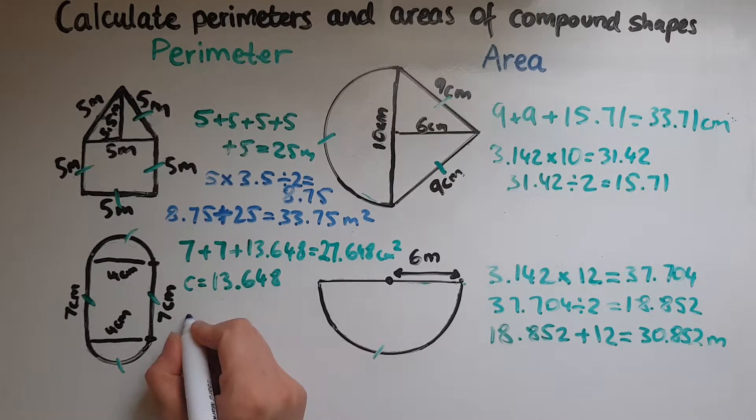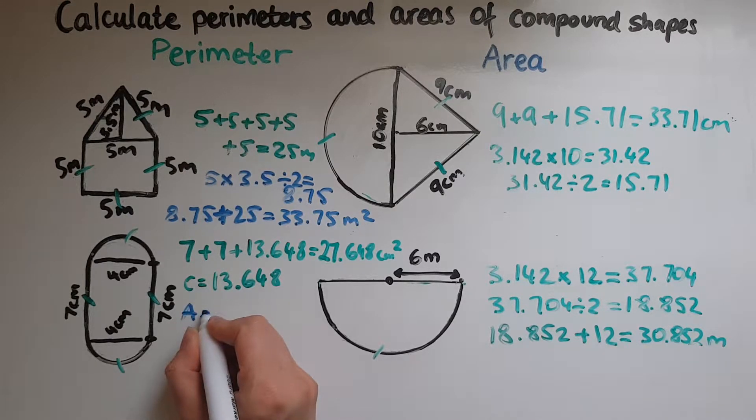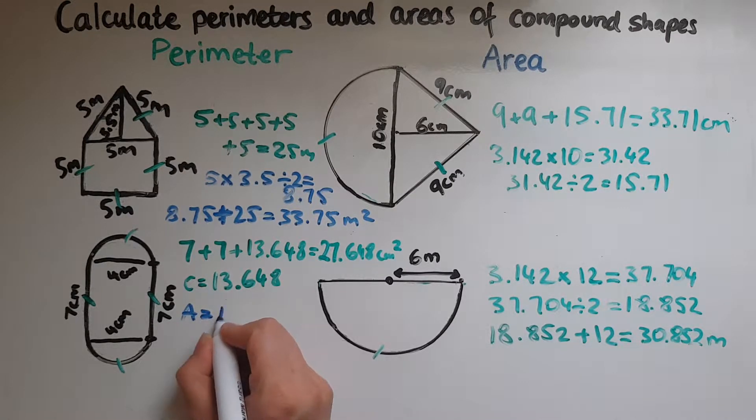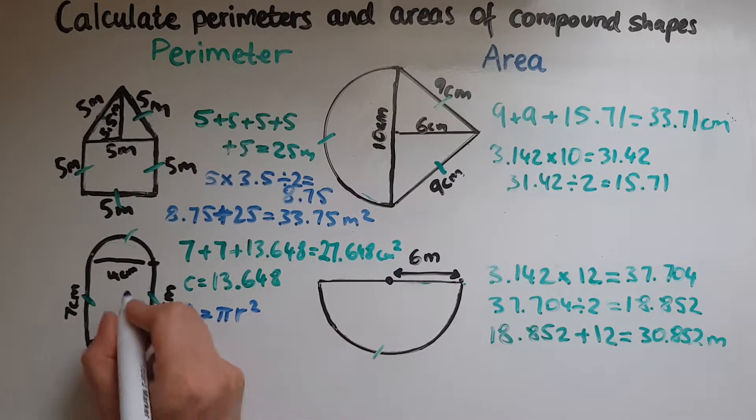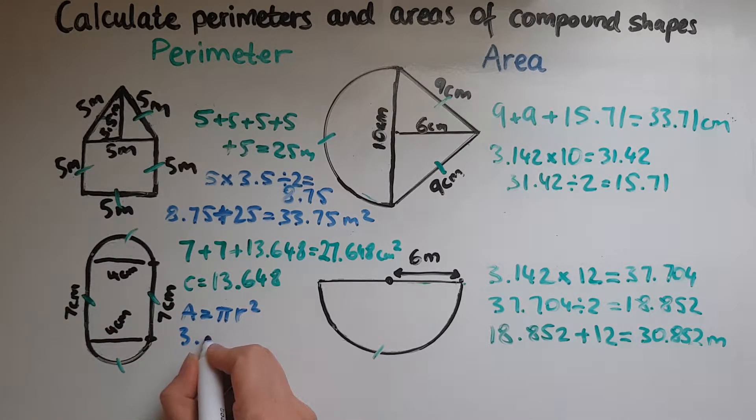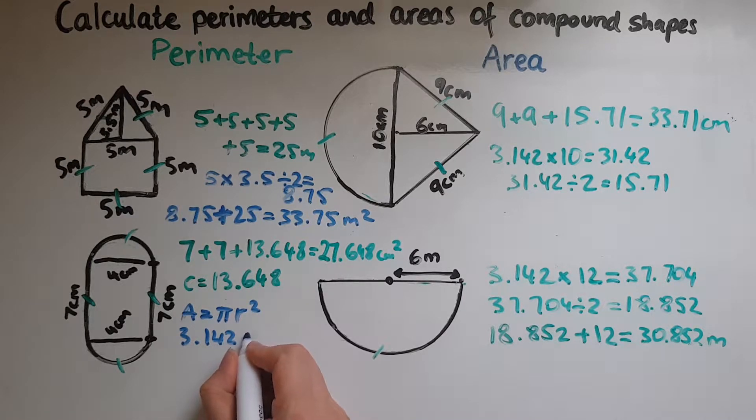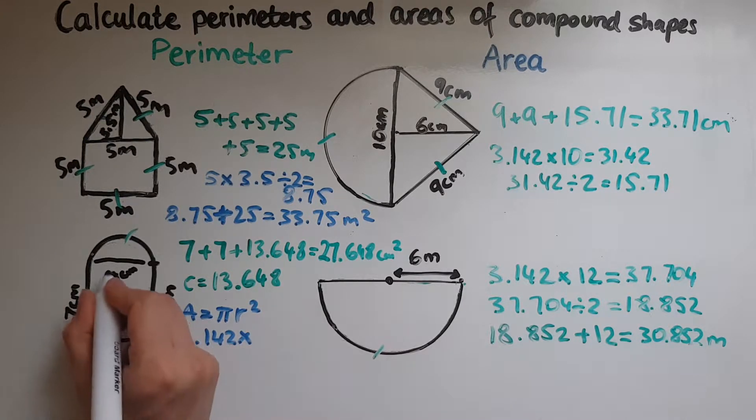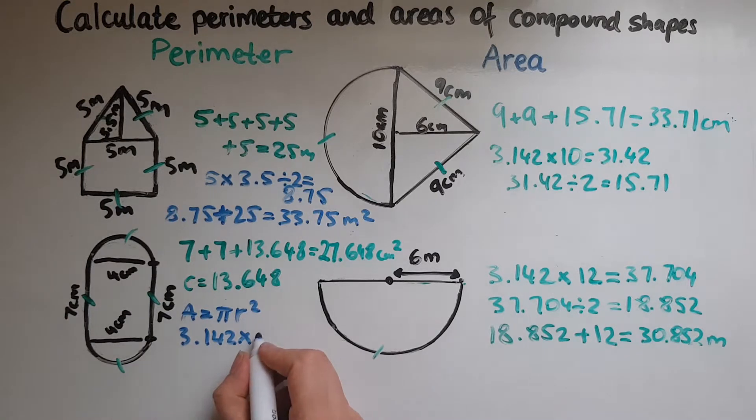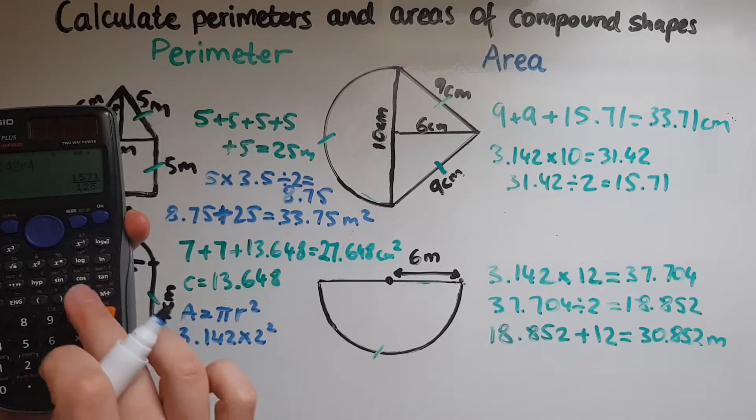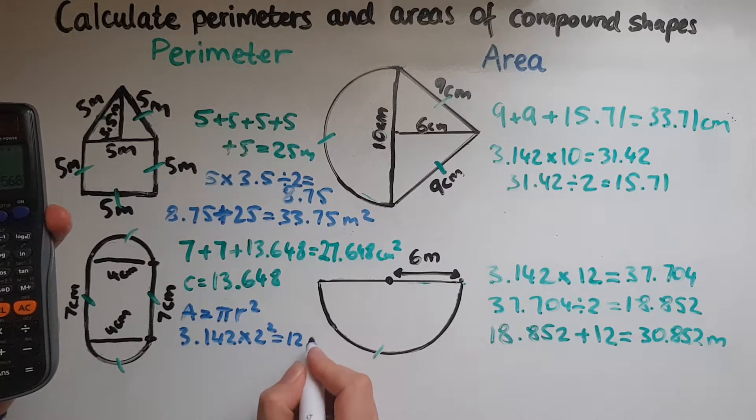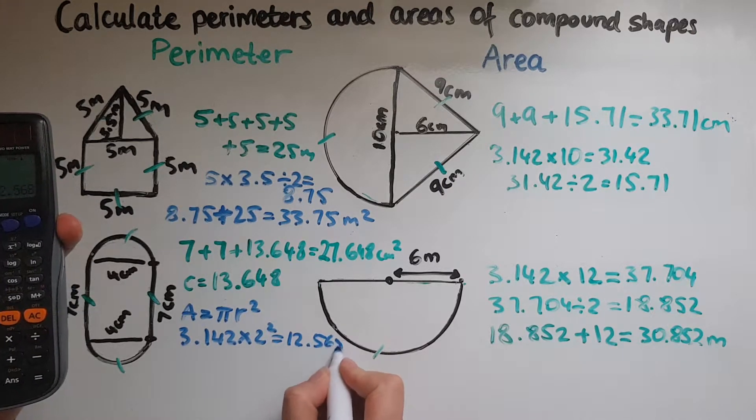The area of the circle is found by multiplying pi with r squared. So three point one four two times four. The radius is two, two squared which is four. So three point one four two times four gives us twelve point five six eight.